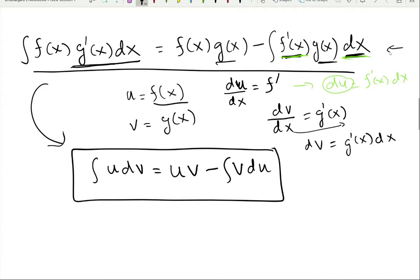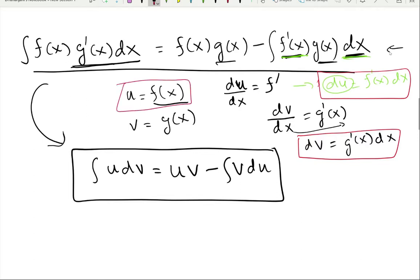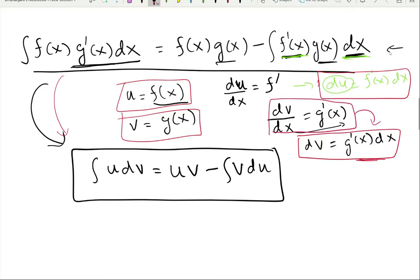Each individual term in this transformation is correct, but the process is mathematically wrong. To get dv = g-prime·dx from dv/dx = g-prime, I treated dv/dx as a fraction and moved dx to the other side — but you cannot treat dv/dx as a fraction.